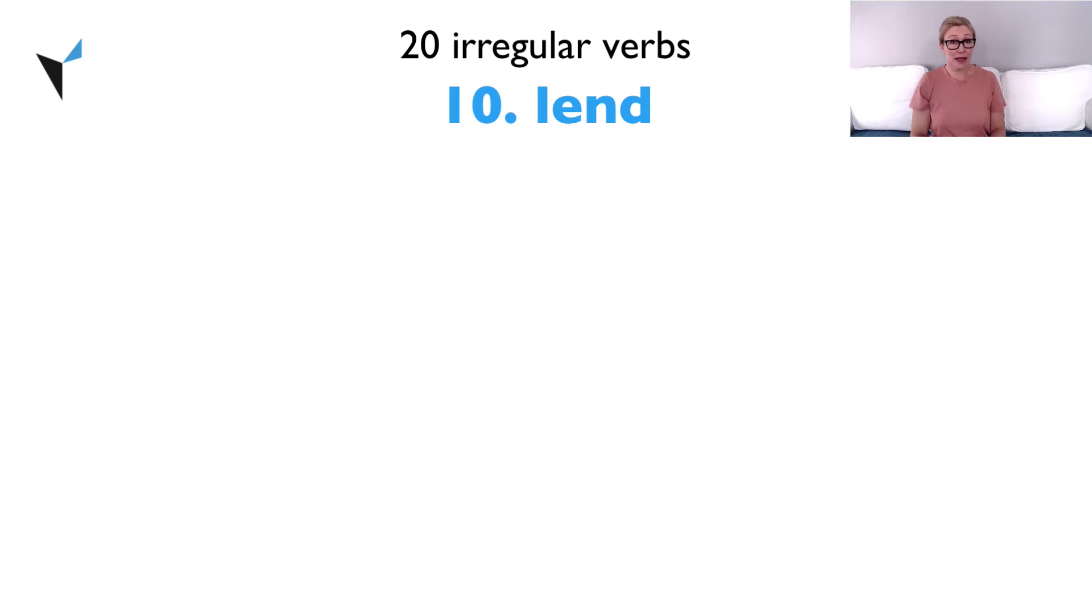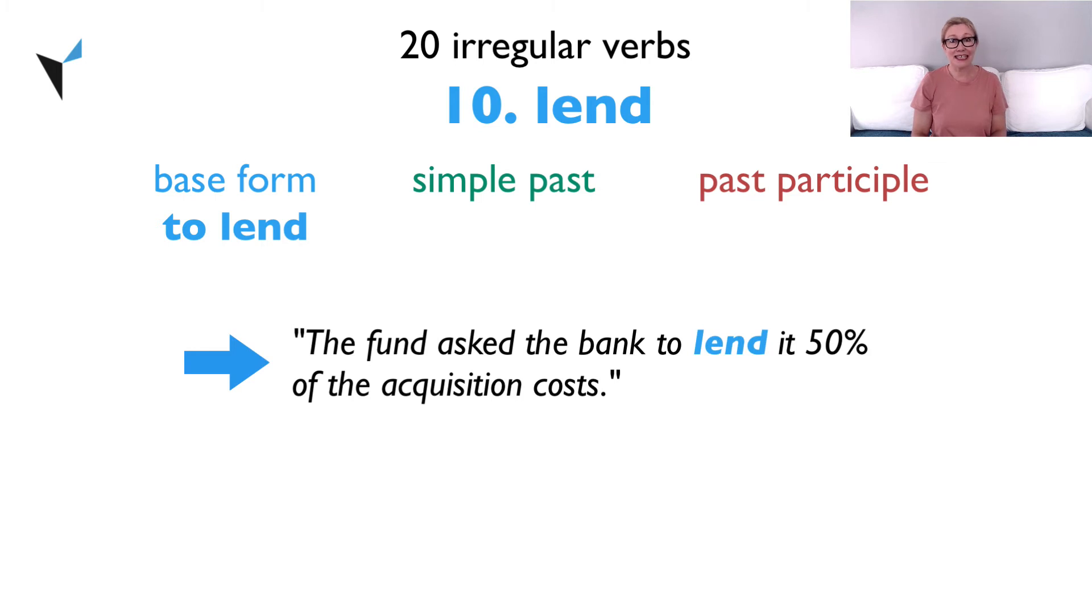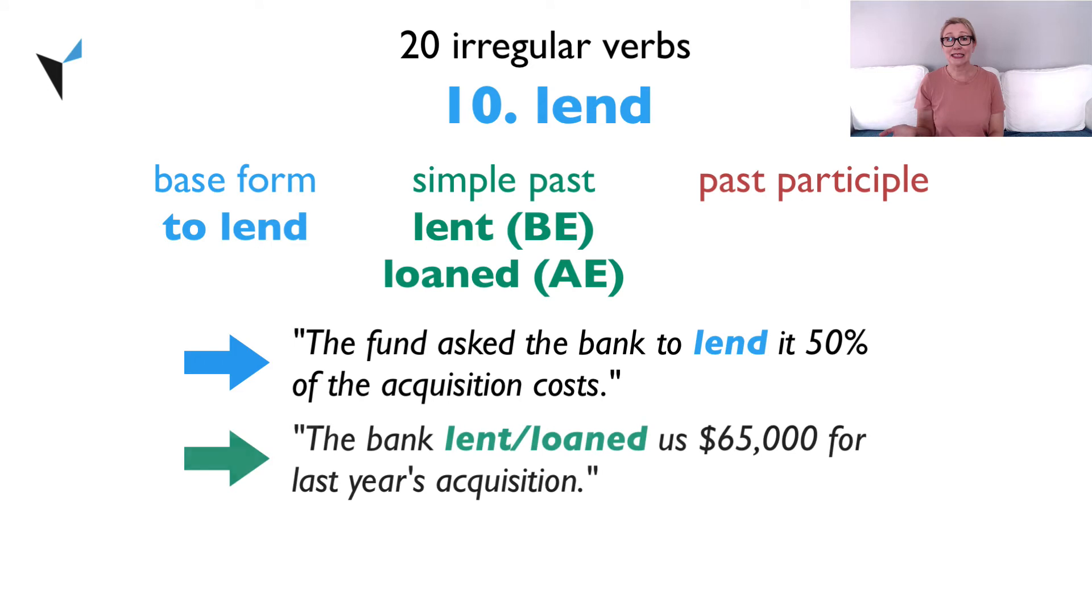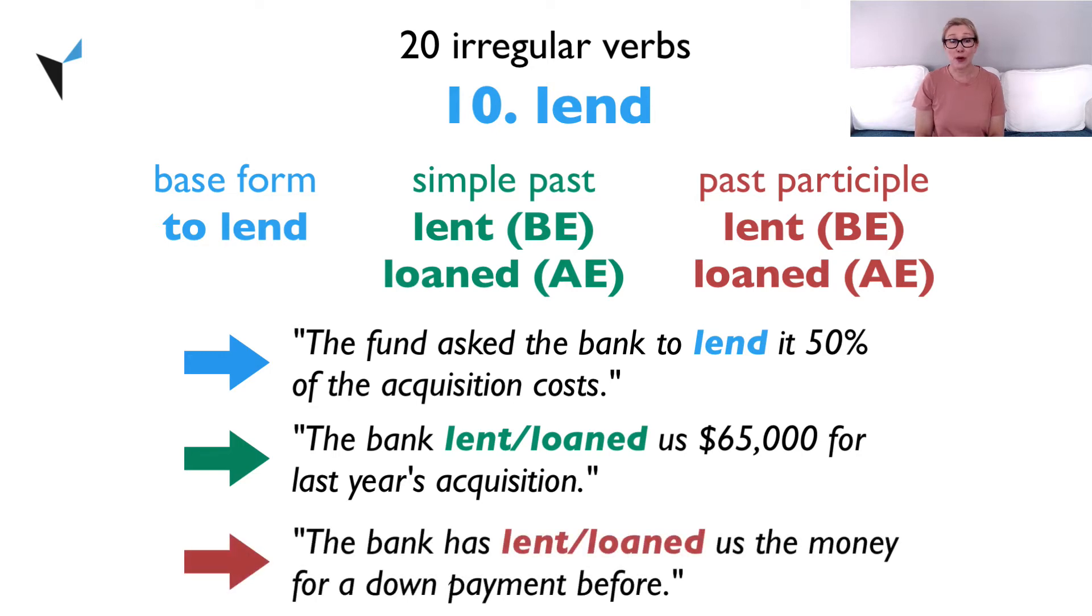Next up is verb 10, lend. The base form is to lend. The fund asked the bank to lend it 50% of the acquisition costs. The simple past is lent in British English and loaned in American English. The bank lent or loaned us $65,000 for last year's acquisition. The past participle is also lent in the UK and loaned in the US. The bank has lent or loaned us the money for a down payment before.